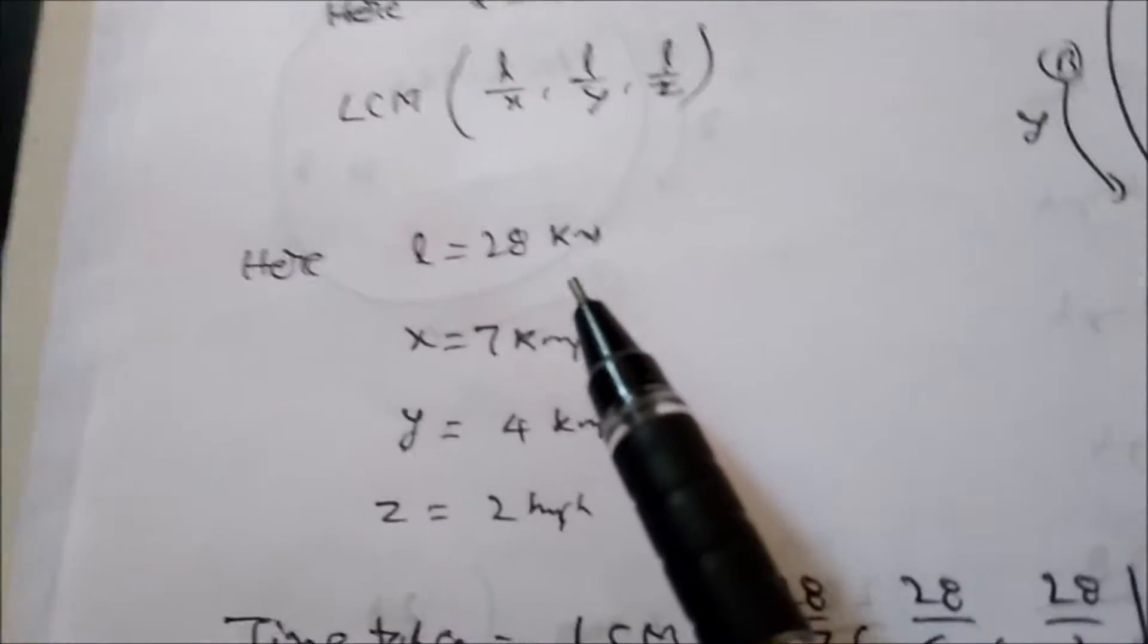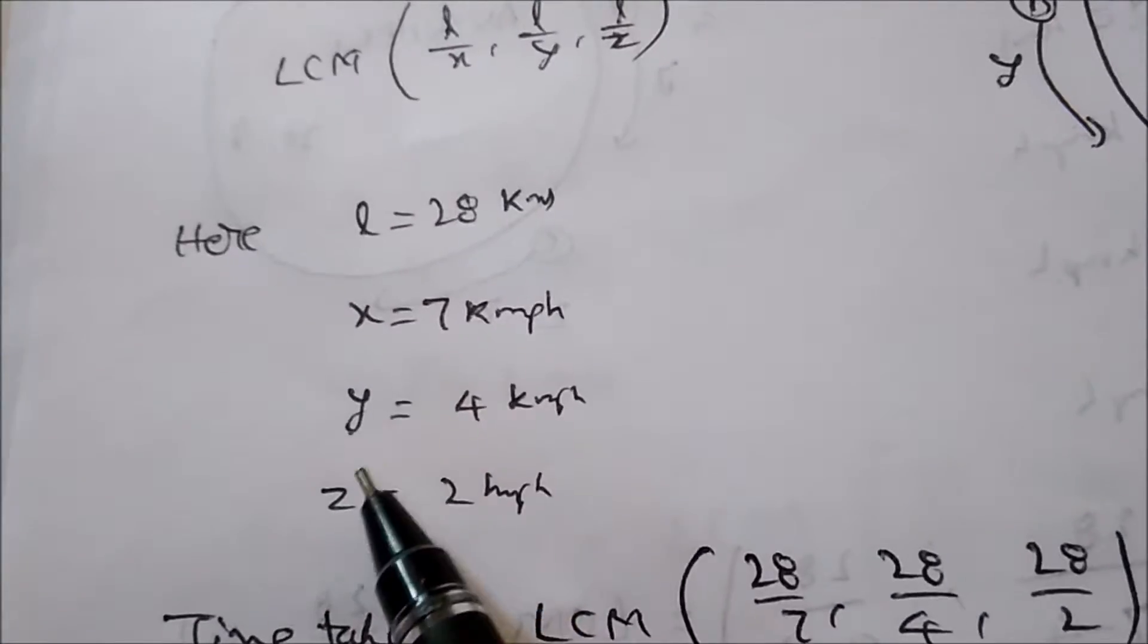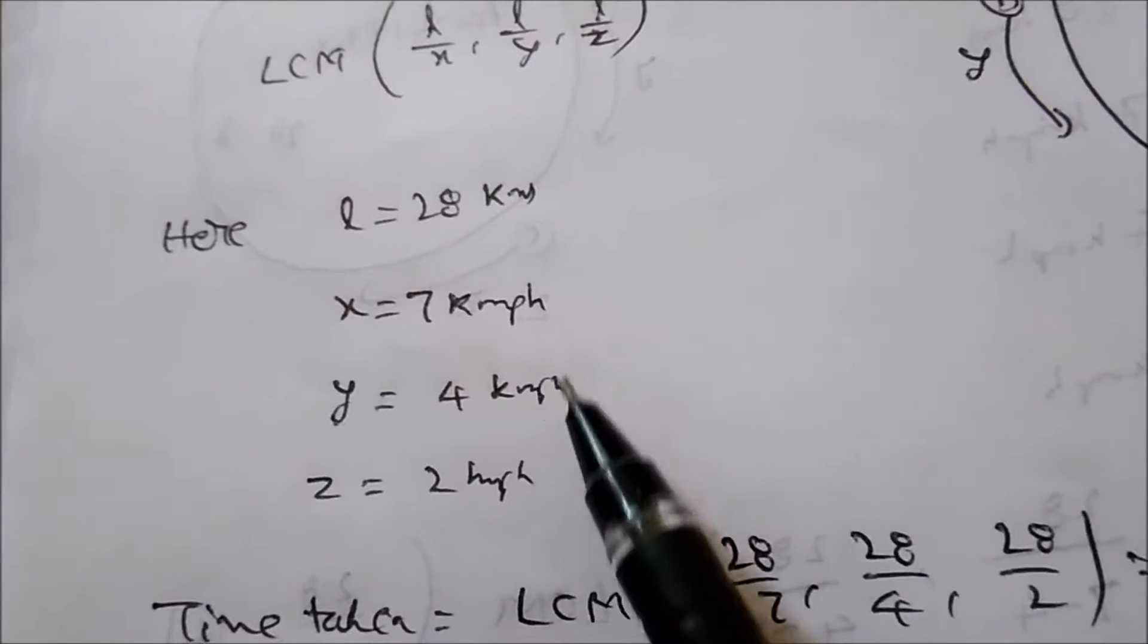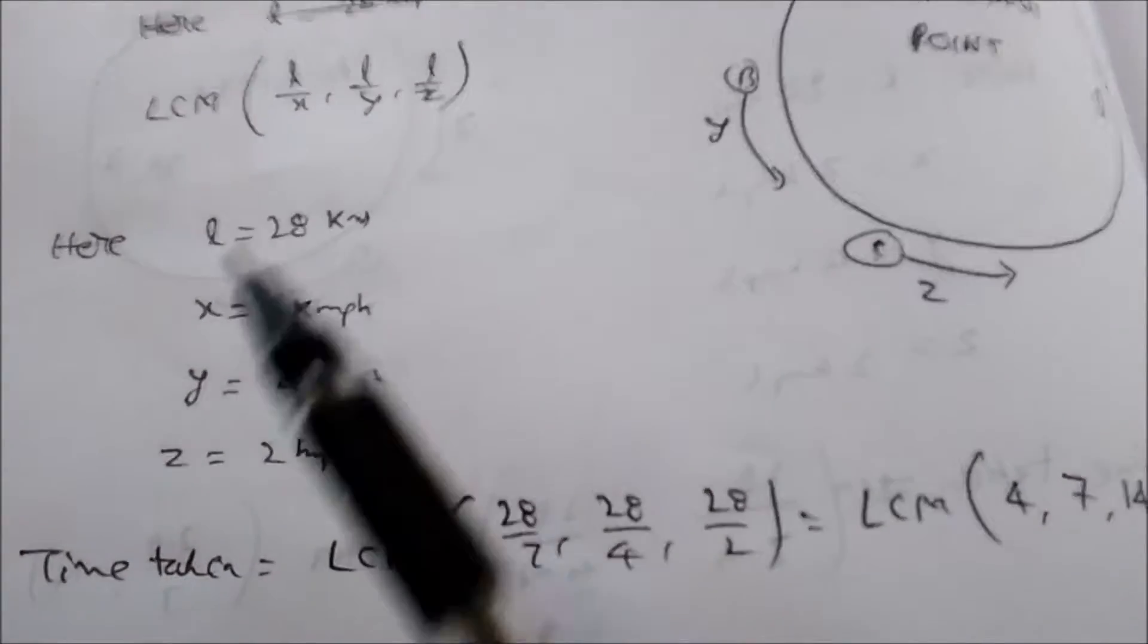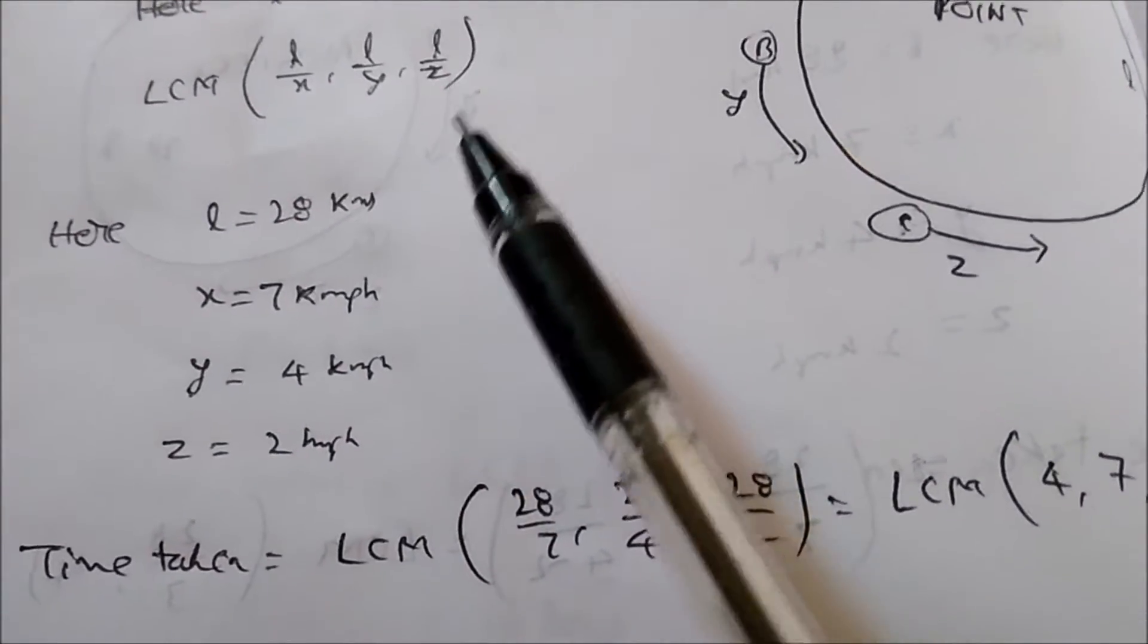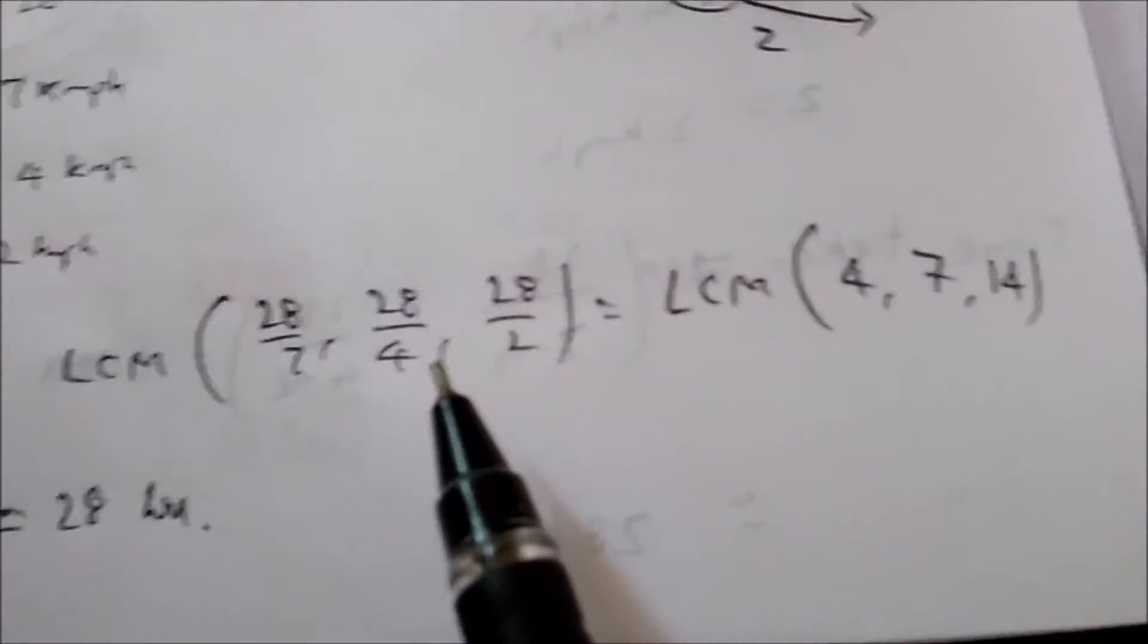Now substitute these values in the given formula. Time taken is equal to LCM of L/X, L/Y, L/Z, that is 28/7, 28/4, 28/2.